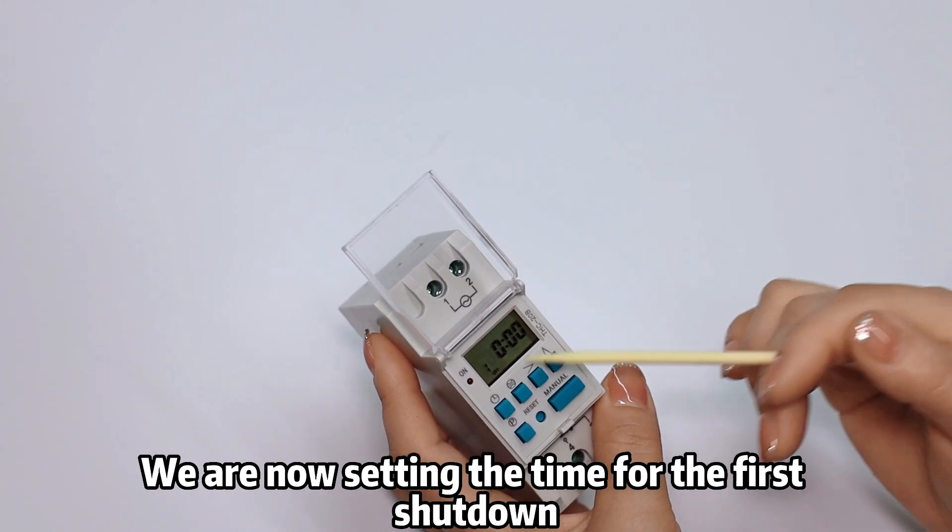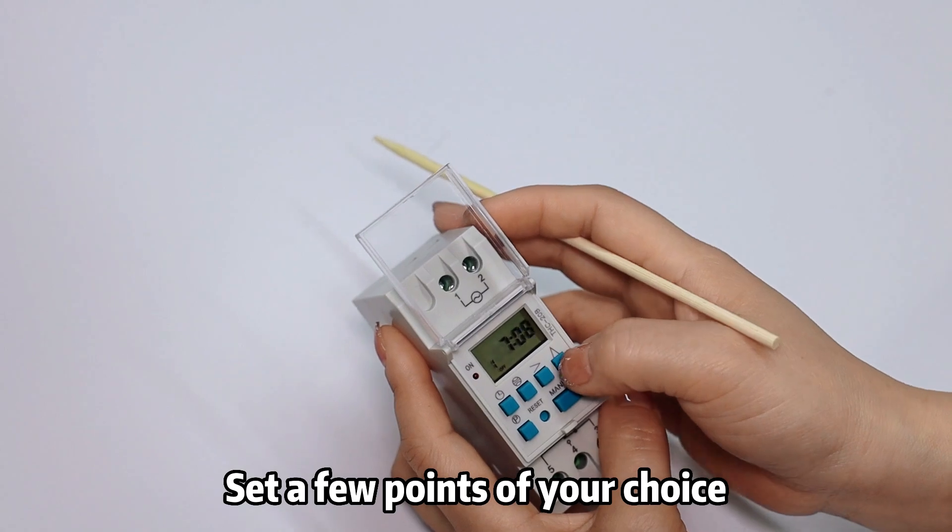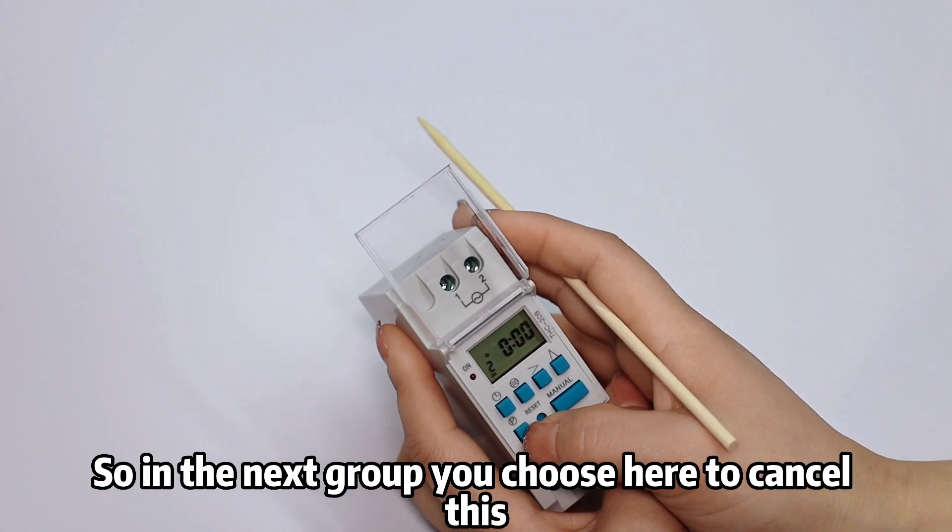We are now setting the time for the first shutdown time. You can also set your own time, set a few points of your choice. In the next group, you choose here to cancel this. This is opening and unwinding the warp and weft.